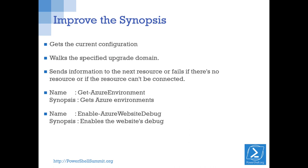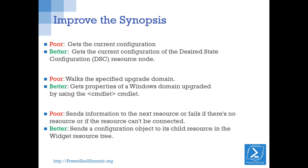Looking at real synopses: 'Gets the current configuration' — does this apply to my technology? Will it solve my problem? Now I have to invest time figuring out what's going on. 'Walks the specified upgrade domain' — this is an idiom, and not all our users are native English speakers; be careful of idioms. A very long synopsis isn't necessarily better. 'Sends information to the next resource' — 'next' is contextual. And then there's Azure where they simply repeat the cmdlet name — it's on GitHub, you can help.